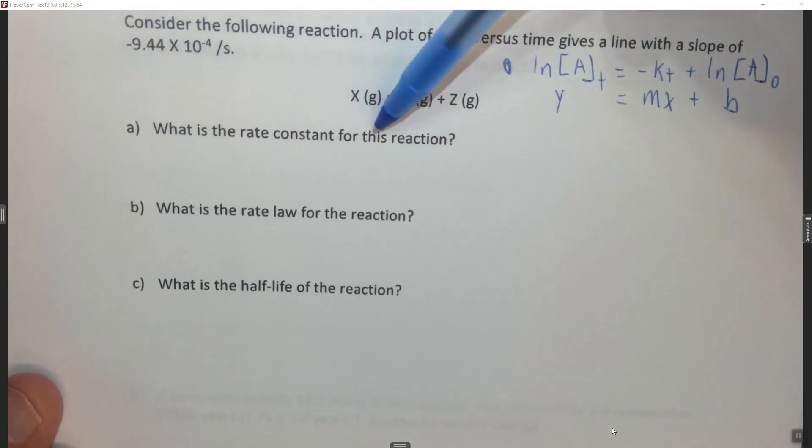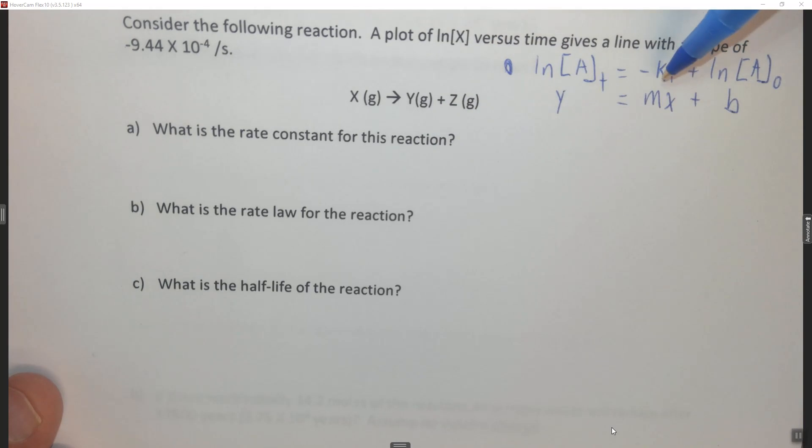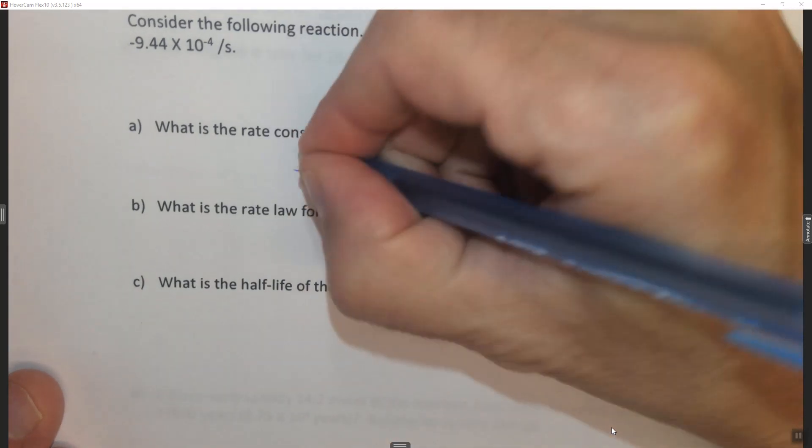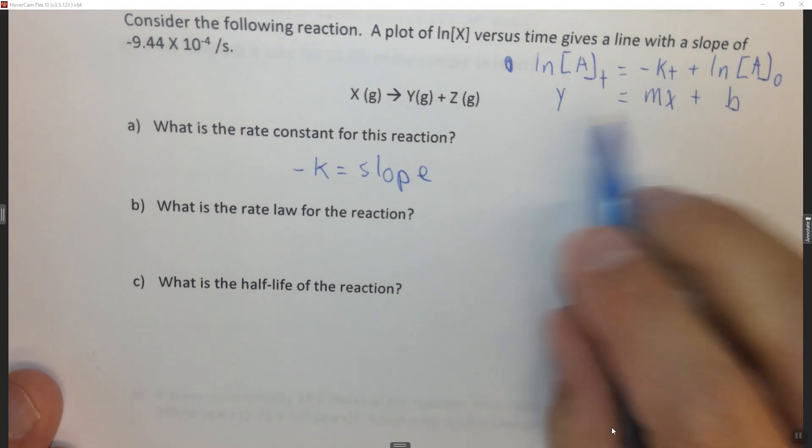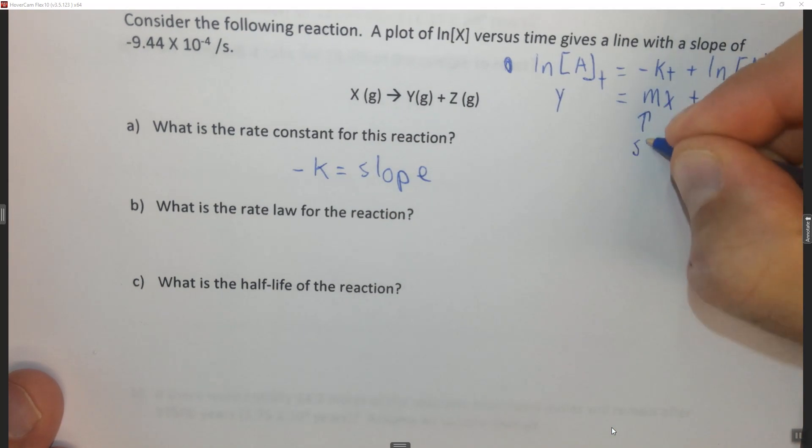So it says what is the rate constant for this reaction? The rate constant, negative k, equals the slope, right? Because y equals mx plus B, m is the slope.